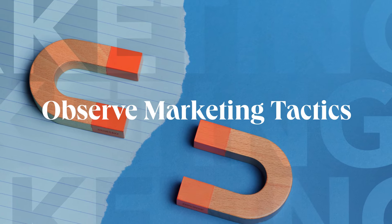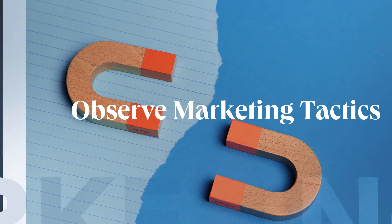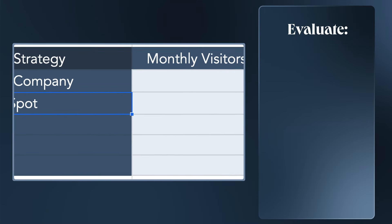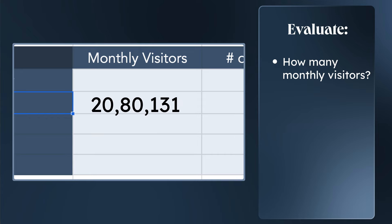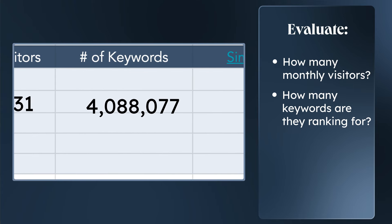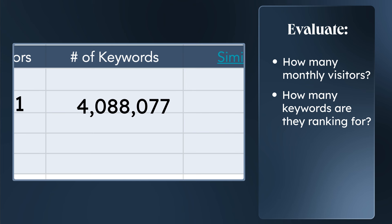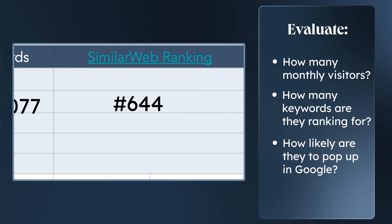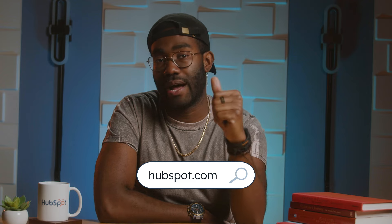Step cinco — which is five in Spanish — do some sleuthing into your competitors' marketing tactics. You can use an online tool such as Ahrefs or SEMrush to check out competitors' web traffic and SEO performance. How many unique visitors are they getting to their site each month? How many keywords is their website ranking for? In other words, when a potential buyer searches for a product on Google, how likely is it that your competitor's website pops up? Pull up your SEO tool of choice, type in your competitor's URL, and you'll get a snapshot into their monthly web traffic and the keywords they're currently ranking for.